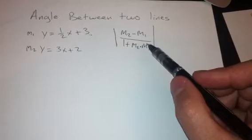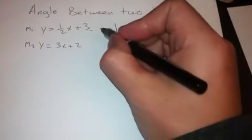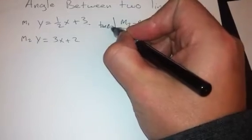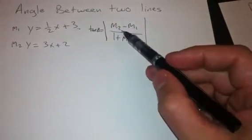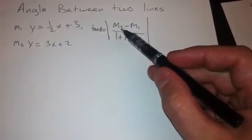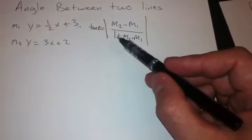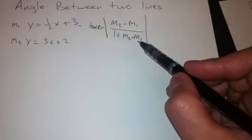To find the angle between the two lines, we're actually going to say tan theta equals slope of line two minus slope of line one, over one plus slope of line two times slope of line one.